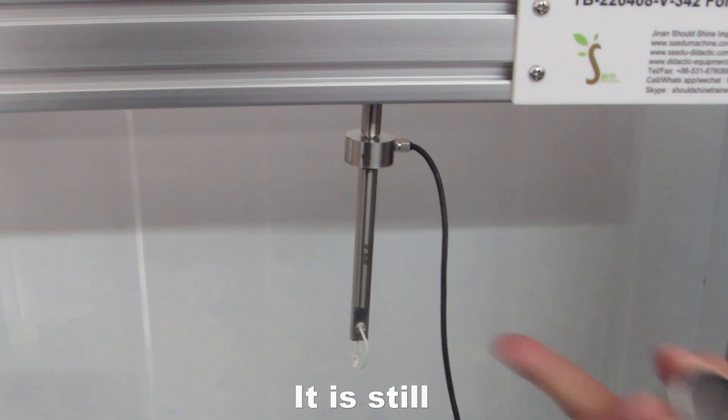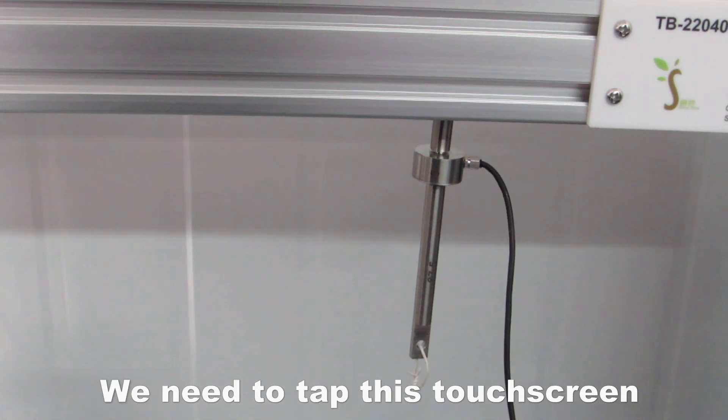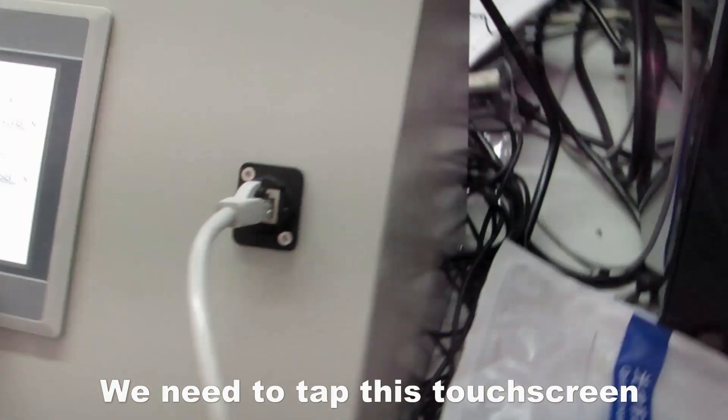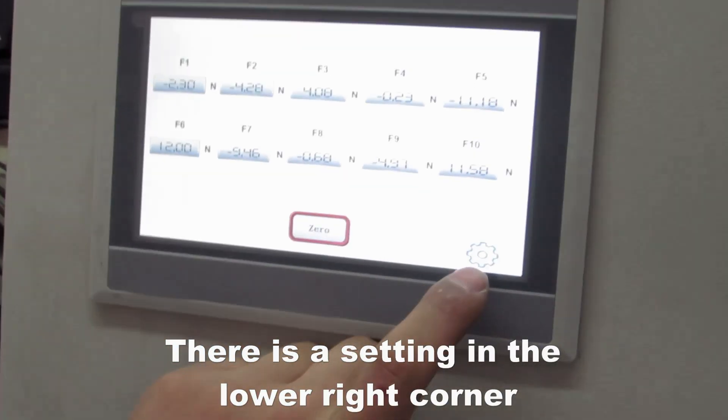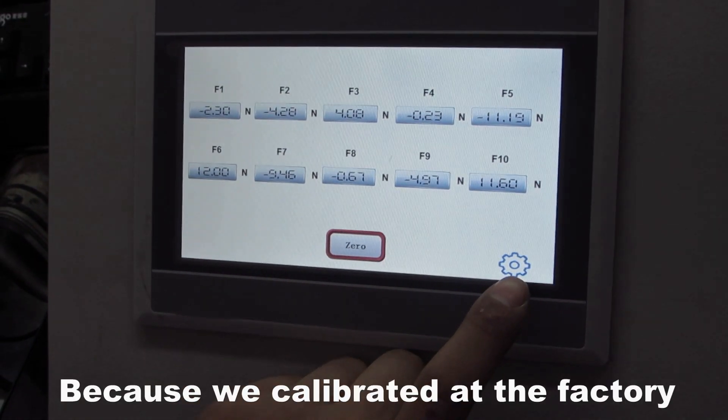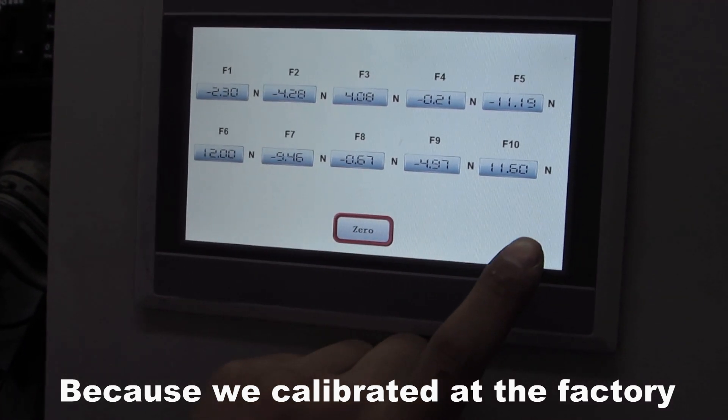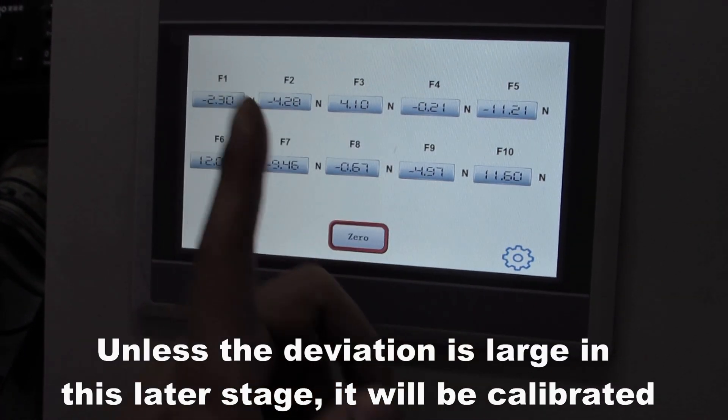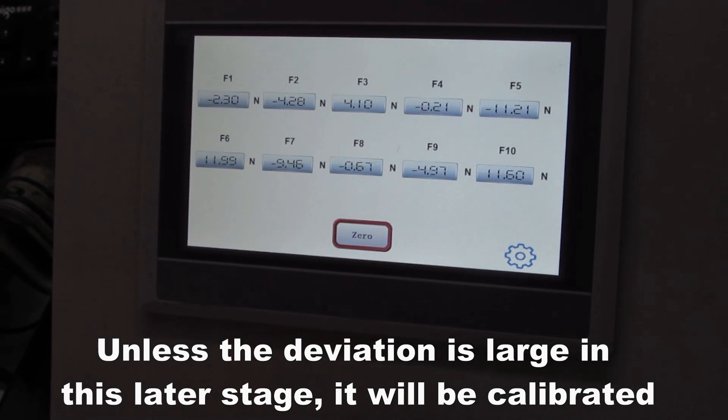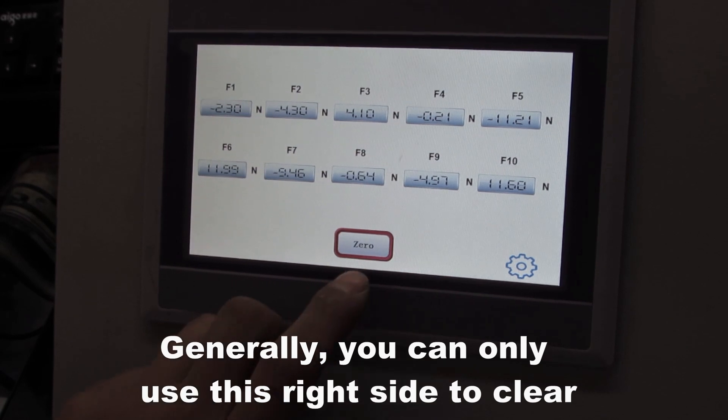It is still in the state without weights below. We need to tap this touch screen. There is a setting in the lower right corner. This setting is usually not used because we calibrate it at the factory, unless the deviation is large in this later stage. It will be calibrated generally.